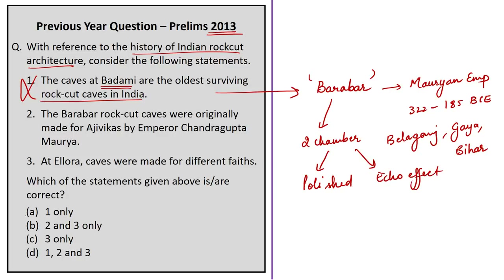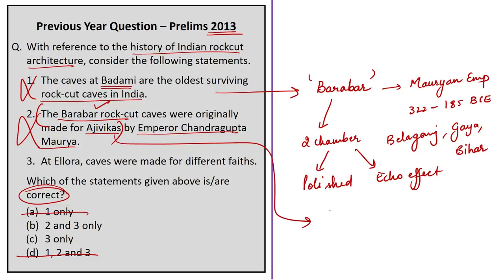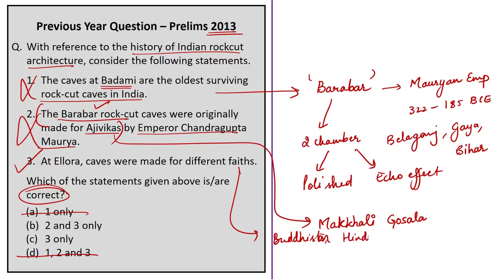Since statement one of the 2013 question is wrong, options A and D can be eliminated. Statement two — that Barabar rock-cut caves were originally made for Ajvikas by Emperor Chandragupta Maurya — is also wrong. The first half is correct (they were made for Ajvikas), but the sect was founded by Makkhali Gosala, not Chandragupta Maurya. Statement three — that Ellora caves were made for different faiths — is correct: Buddhism, Hinduism, and Jainism, built in proximity to demonstrate religious harmony. The correct answer is option C, three only.